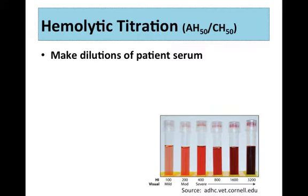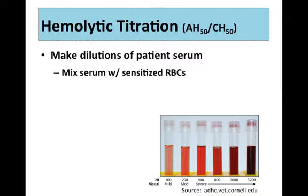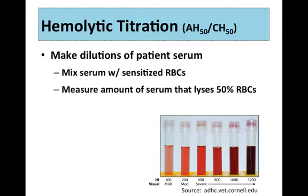Hemolytic titration is a bit trickier. In this case, we're looking at the end result of complement, which is the lysis of cells. You make varying dilutions of the patient serum and mix those dilutions with sensitized red blood cells — red blood cells that have been coated with an antibody. Antibody binding to a cell is one of the triggers for the classical cascade. So if you have complement proteins and expose them to antibody-coated cells, they proceed normally and cause lysis. You measure the amount of serum it takes to burst 50% of the red blood cells.